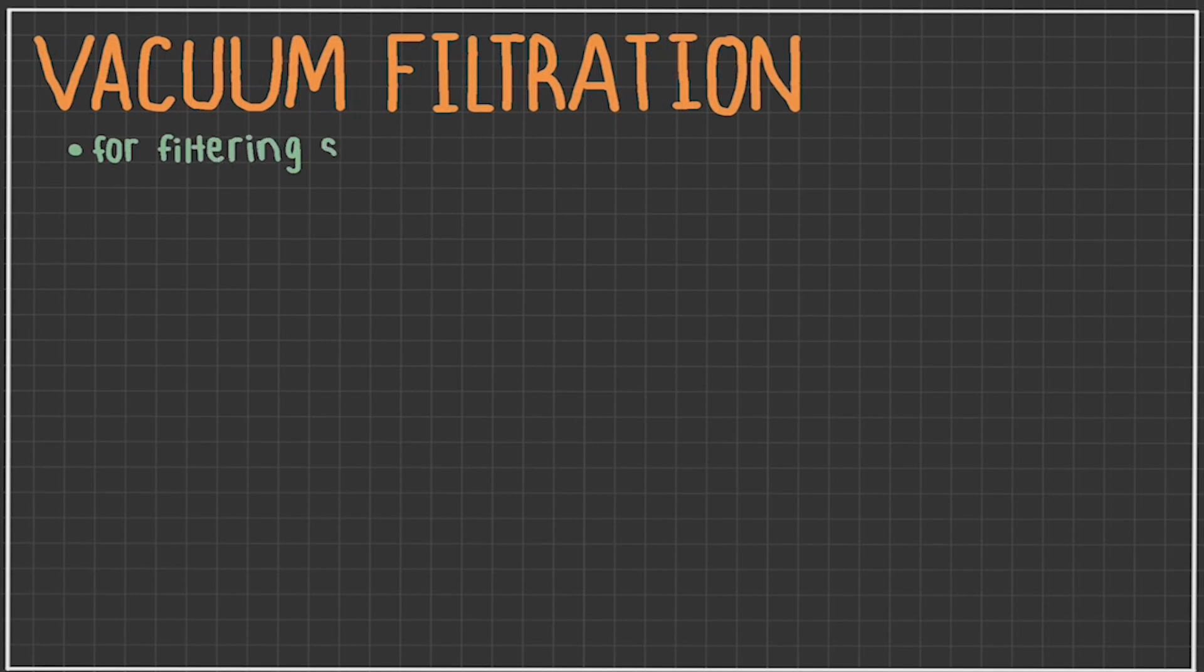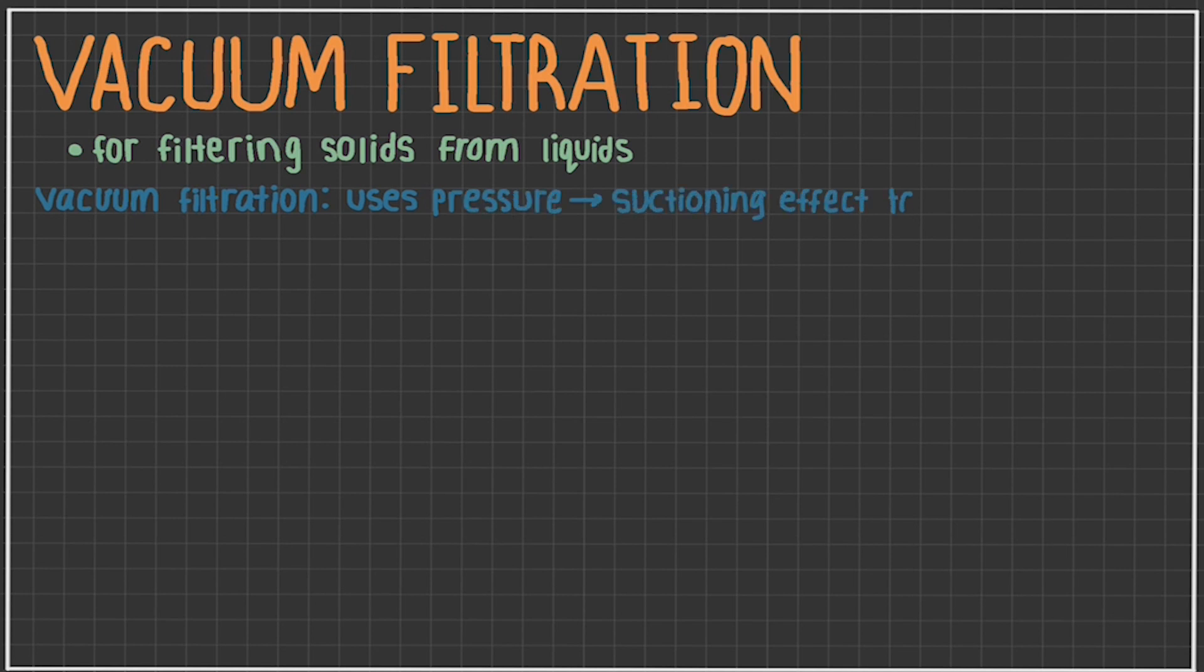Vacuum filtration is up next. This is best for filtering solids from liquids. Vacuum filtration uses pressure to create a suctioning effect that filters solutions faster than simply by gravity. A diagram will best explain this concept.